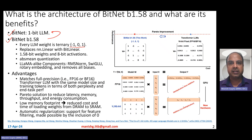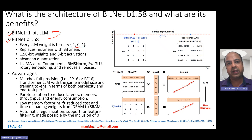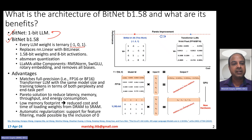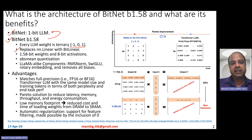The idea is you take the weights, normalize them using their average — the average weights in the weight matrix — and then assign each weight to minus one, zero, or plus one depending on whichever level they are closest to. Just like BitNet, BitNet 1.58 also replaces the linear layer with BitLinear, except that it does this ternary quantization.